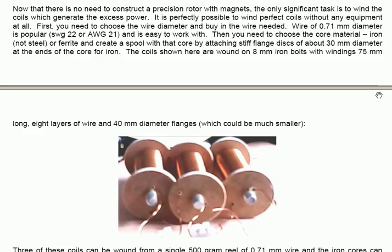But, now that we have no need to construct a precision rotor with magnets, the only significant task we have is to wind the coils. These coils generate the excess power. It's perfectly possible to wind perfect coils without any equipment at all. First, you need to choose the wire diameter, and buy in the wire needed. Wire of 0.71 mm diameter is popular. That's standard wire gauge number 22, or American wire gauge number 21. And, wire of that size is easy to work with. It doesn't get tangled up, and it's quite flexible.